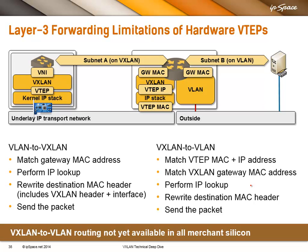If you go from VLAN to VXLAN, the packet comes in and the hardware has to match the gateway MAC address — it has to recognize this is its own MAC address and go into Layer 3 code. Then the hardware does a Layer 3 lookup, finds the next hop, and the encapsulation information associated with the next hop includes the full VXLAN header and the outgoing interface. No problem — rewrite and send the packet.